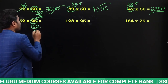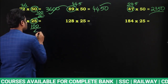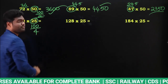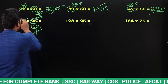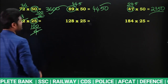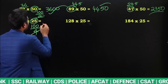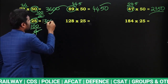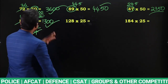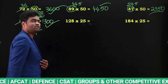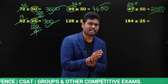25 can be written as 100 by 4. Now for 52×25: 52 divided by 4 gives 13. So 13 into 100 is going to be 1300. The answer is 1300. Don't multiply directly — write 25 as 100 by 4 so that it becomes very easy.